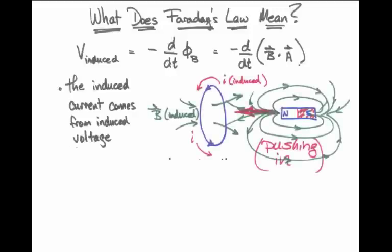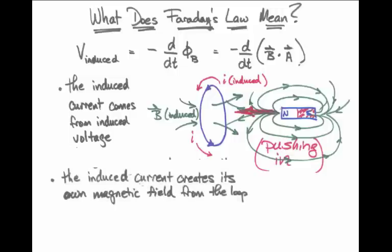Let's look at one particular picture where an induced current in a loop induces a magnetic field in reaction to pushing a bar magnet in. I'm taking the north pole of a bar magnet and trying to shove it through a loop of wire. Faraday's law of induction — that minus sign — means the induced current tries to create a magnetic field that opposes what you are trying to do.